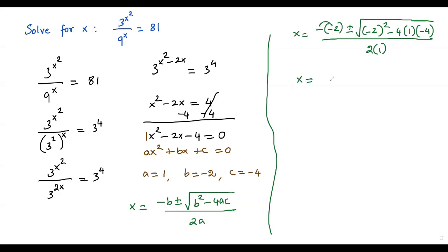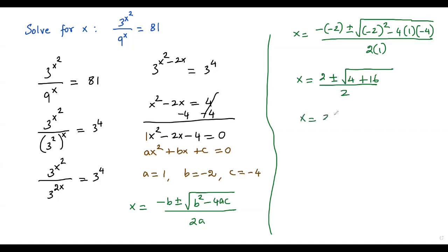Simplifying: negative times negative 2 becomes positive 2, plus or minus square root of negative 2 squared equals positive 4, and negative 4 times 1 times negative 4 equals positive 16, over 2 times 1 equals 2. So x equals 2 plus or minus square root of 4 plus 16 over 2, which simplifies to 2 plus or minus square root of 20 over 2.